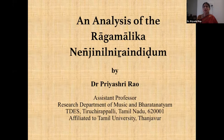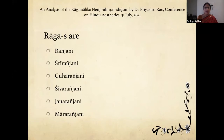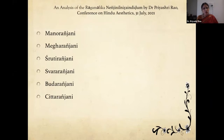That's the first section of the composition. A few details: this is a Raga Malika, which means it's not in one raga — there are 12 ragams in this composition. The sahitya is composed by N.S. Chidambaram, the dhatu or music is composed by T.M. Tyagarajan, the language is Tamil, and the talam is Adi. The ragas in this composition are Ranjani, Shri Ranjani, Guha Ranjani, Shiva Ranjani, Jana Ranjani, Mara Ranjani, Mano Ranjani, Megha Ranjani, Shruti Ranjani, Swara Ranjani.